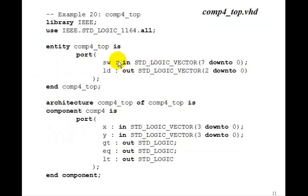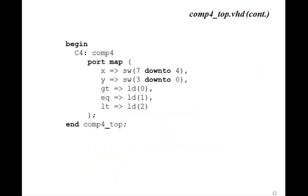Let's make a top-level design with the eight switches and we'll compare the top four switches to the lower four switches. And for the three LEDs, we'll connect those to less than, equal, and greater than. So here's the comp four that we had. Three down to zero for x, three down to zero for y. The outputs will be greater than, equal, less than. That's the component.